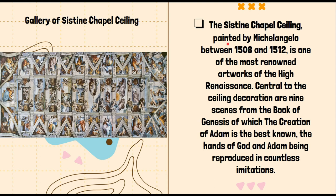One of his most famous works is the Gallery of the Sistine Chapel Ceiling, painted by Michelangelo over four years between 1508 and 1512. It is one of the most renowned artworks of the High Renaissance. Central to the ceiling are the scenarios from the Book of Genesis. In the very center, you can see the scenario where God created Adam — the grey-bearded figure is God, together with the angels, reaching out His hand to Adam to give him life.